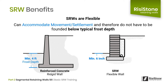One of the major advantages of SRWs is that they are flexible in nature, because they are not mortared together and can allow movement and settlement without failing. As a result, in most cases we do not have to found them below the frost line, which is typically around four feet deep, as we do with rigid structures such as reinforced concrete walls. The normal embedment for SRWs is around 10% of the wall height, which saves significant time and money in excavation.